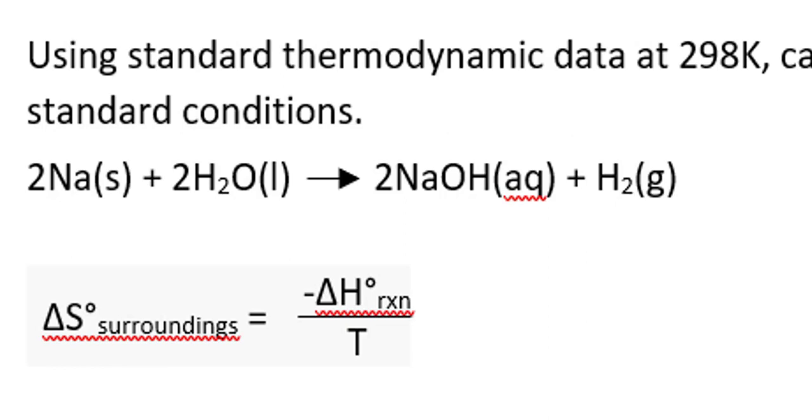The equation we're going to use to determine the delta S surroundings is delta S surroundings equals negative delta H reaction over the temperature in Kelvin.